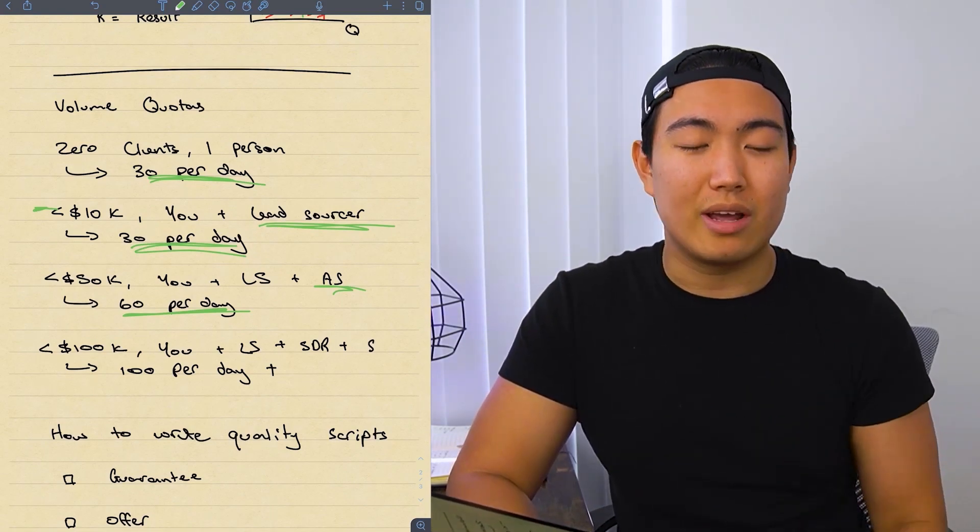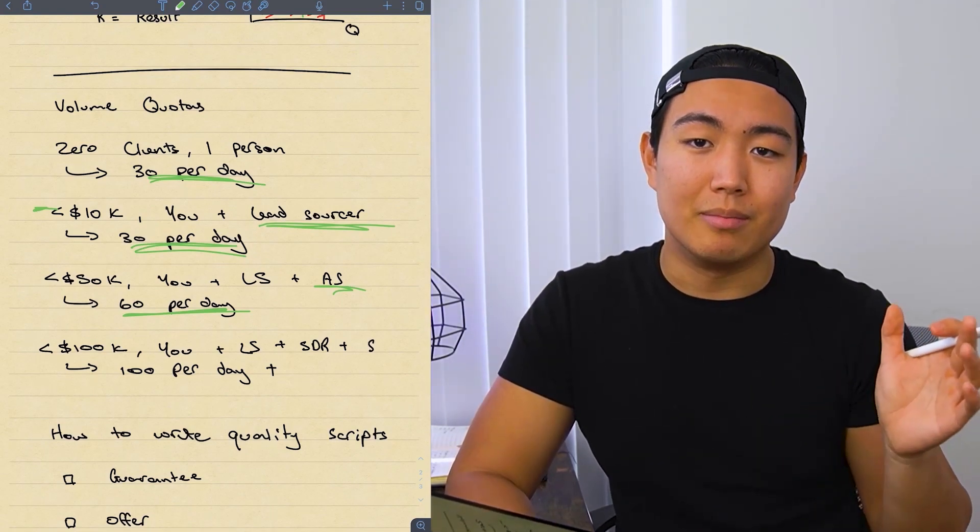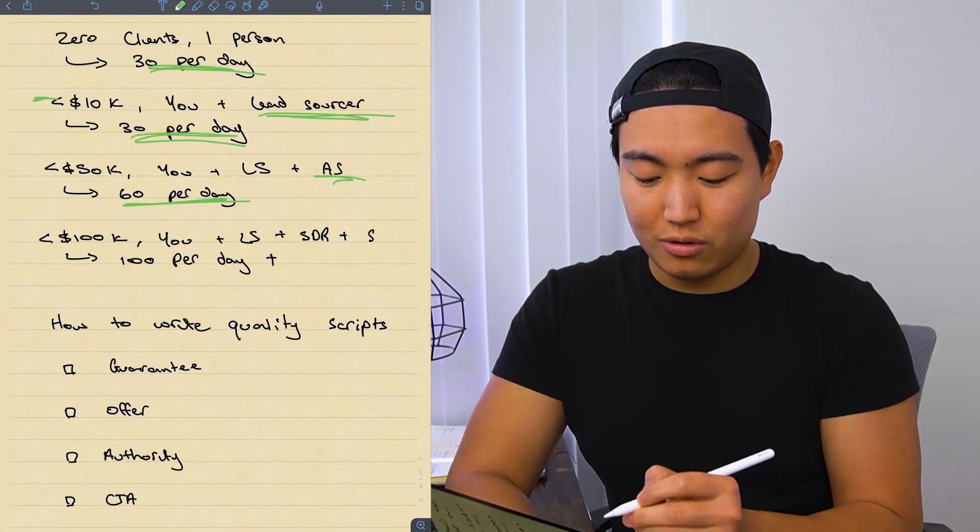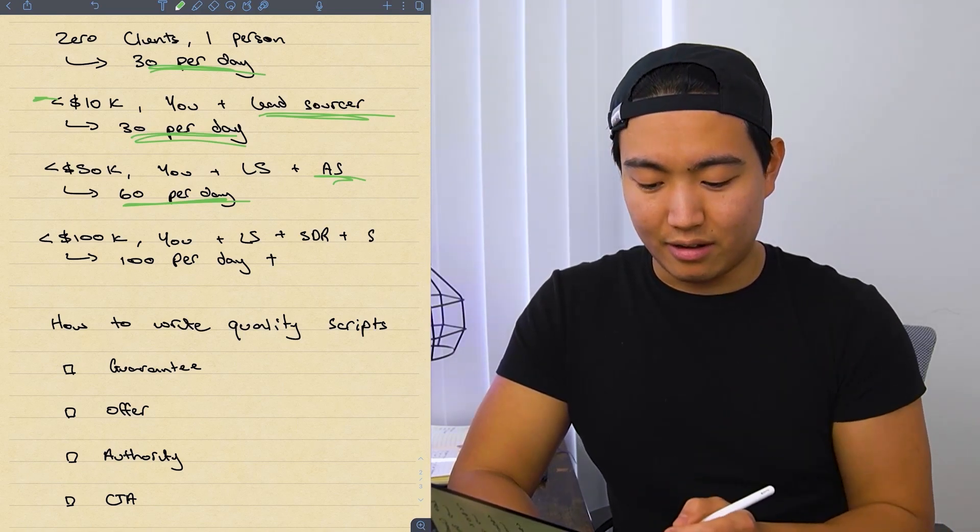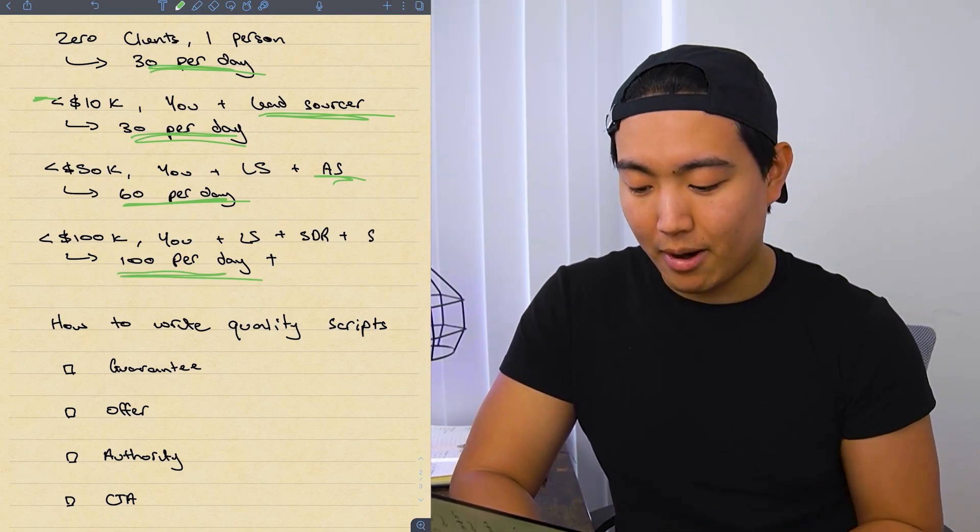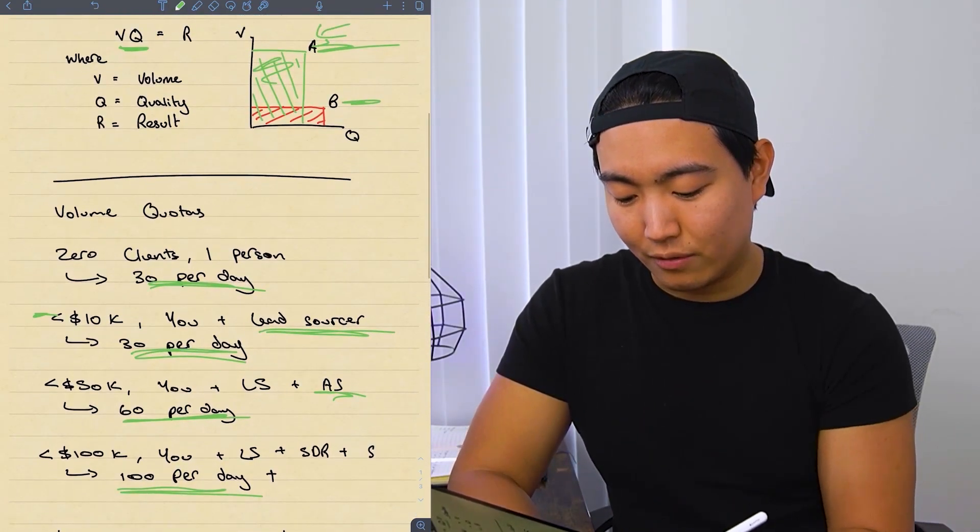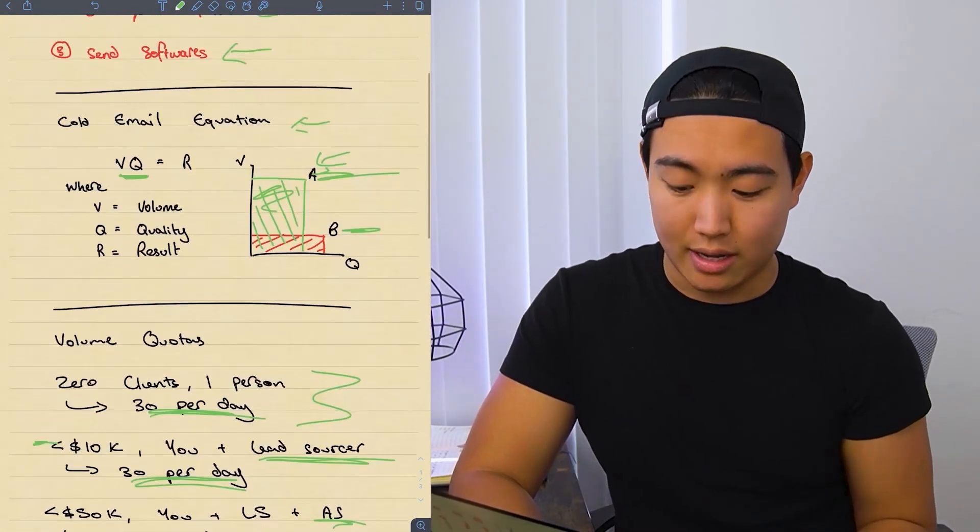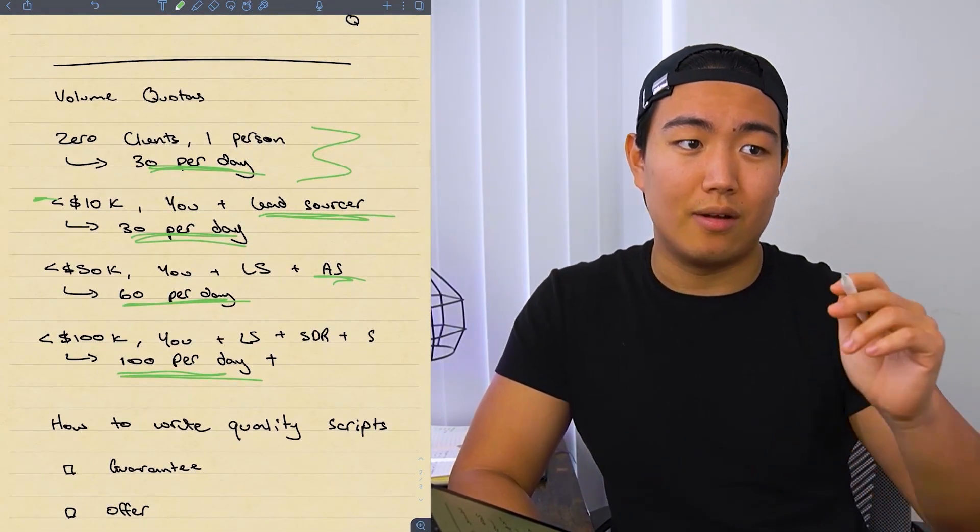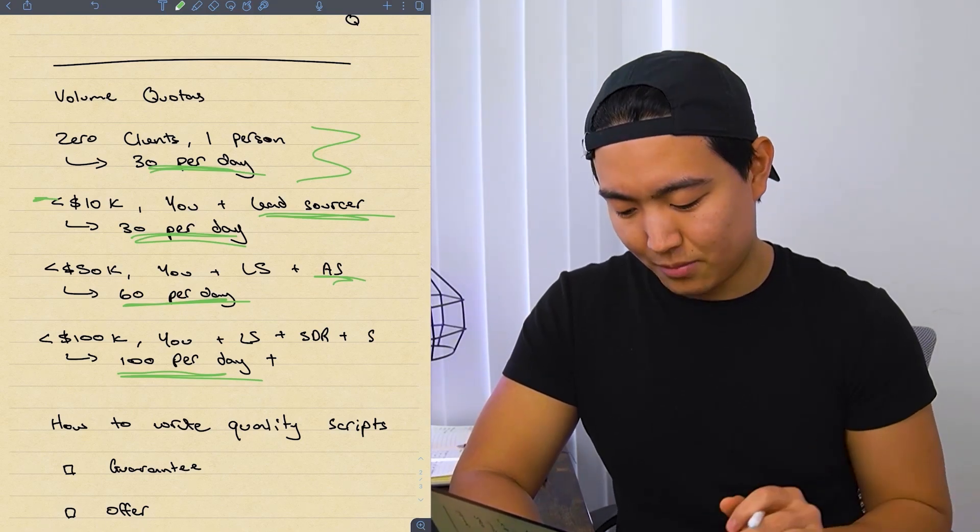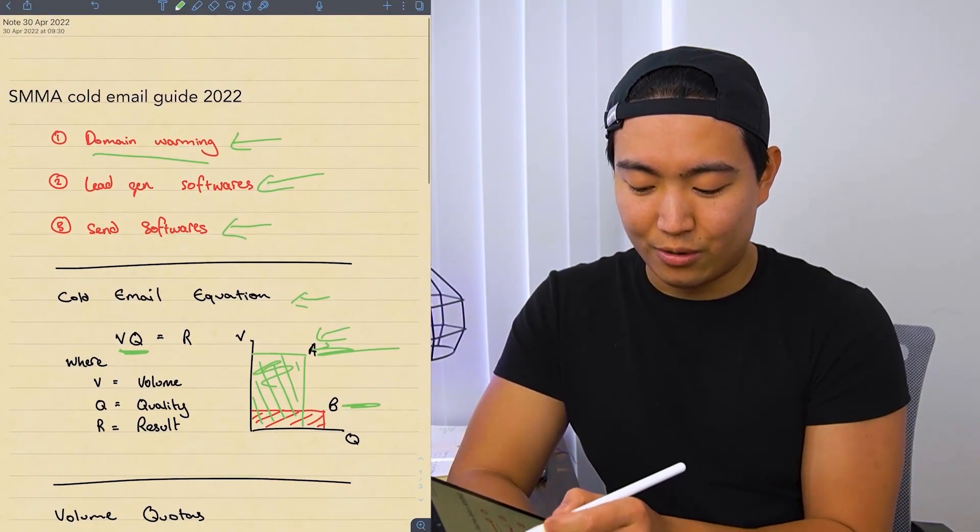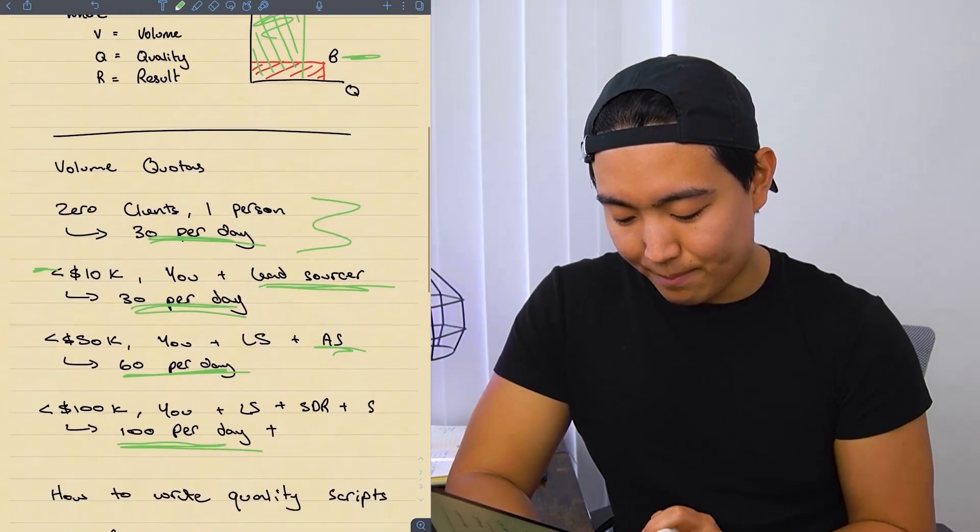So that's how much you should be sending if you're under 50k a month. If you do this, I promise you're going to be onboarding at least two, three clients minimum easily every single month. Now, if you're under 100,000, it should be you, a lead sourcer, SDR and a salesperson and you should be sending minimum 100 a day. So that gets the quotas out of the way. I'm guessing most of you guys would belong in this bracket right here. If you follow 30 per day for like three months, you're going to be at 10k a month. Trust me on that one, provided that your domain warming is solid and you're not landing in spam.